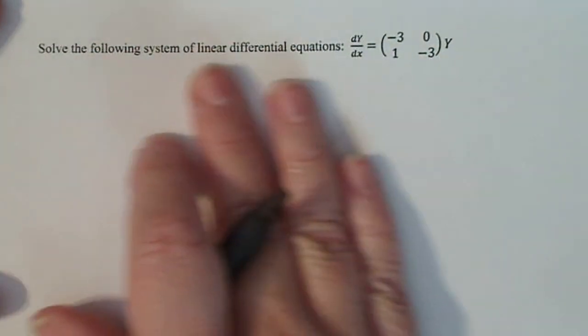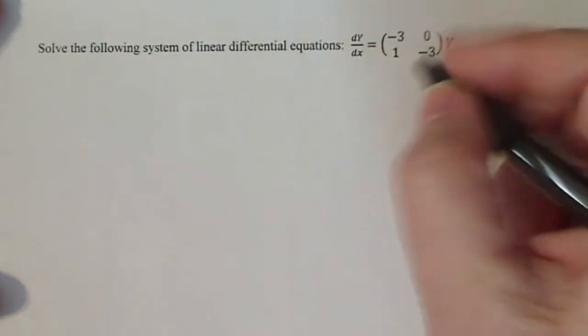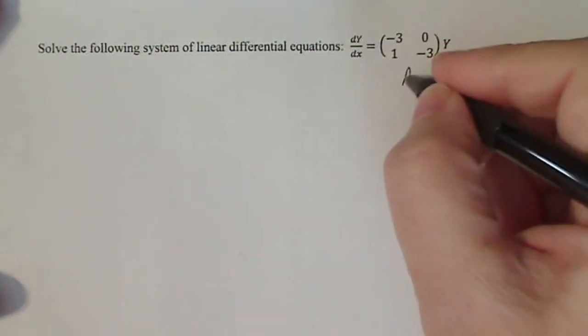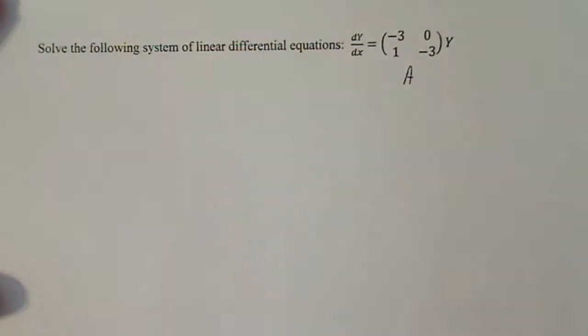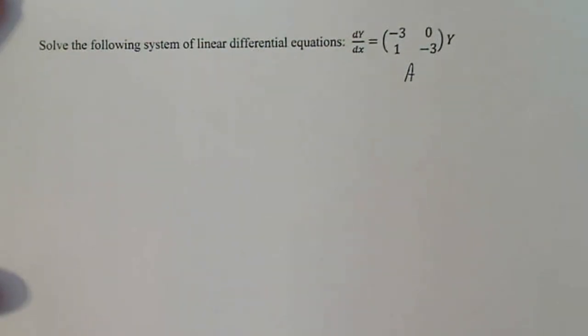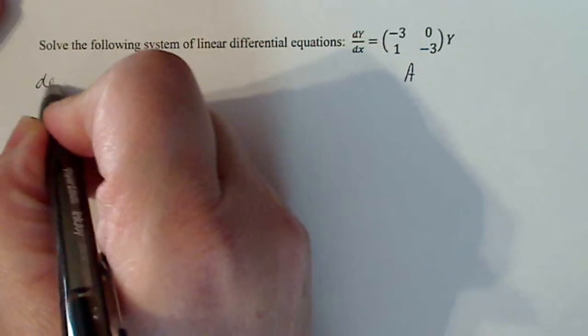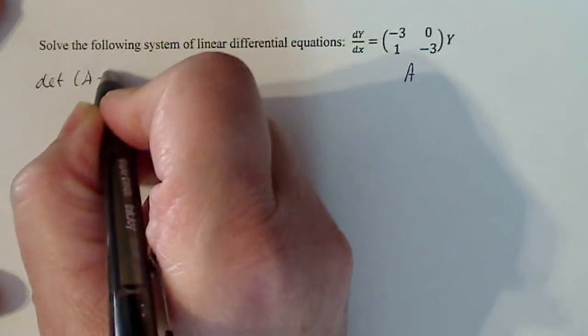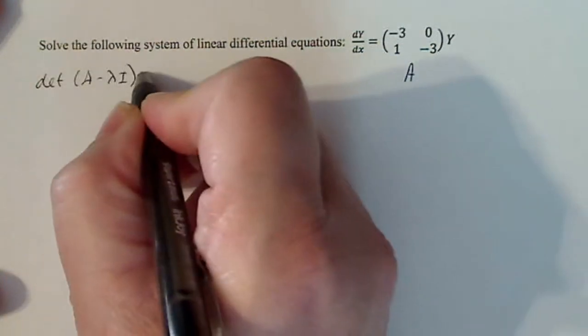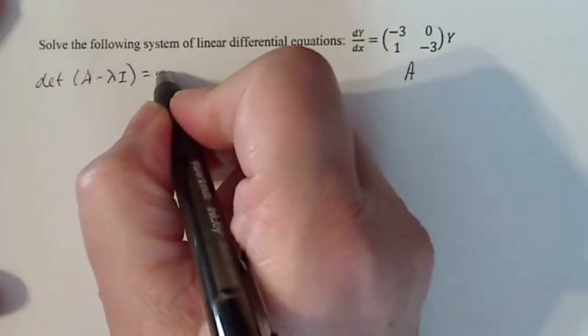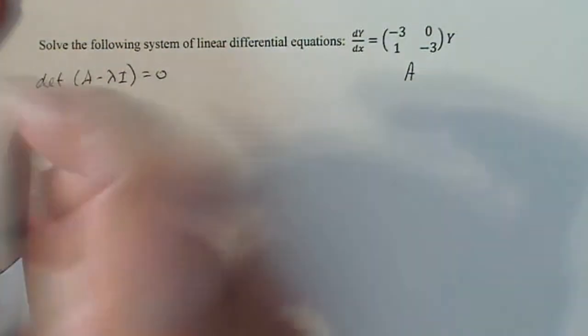Now I'm solving a system of linear differential equations. This is my coefficient matrix A right here. Anytime you have a system of linear differential equations, you do the same thing every time. You find the determinant of A minus lambda I, and you want that to be zero. You're finding lambda such that the determinant of that matrix equals zero.